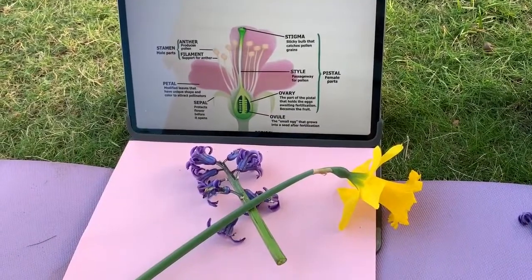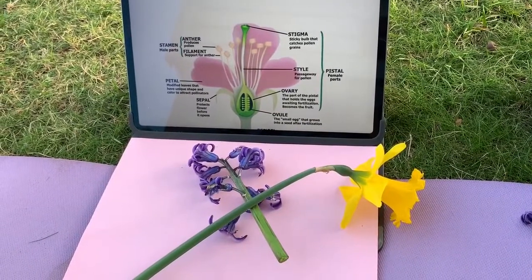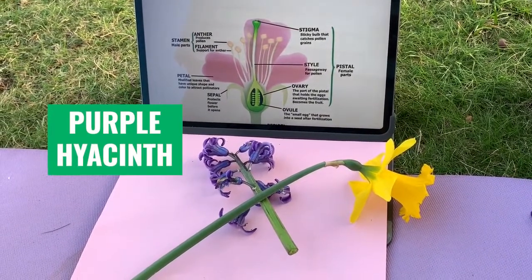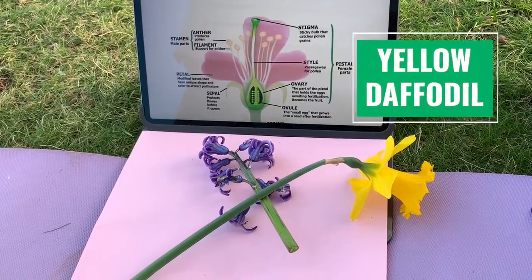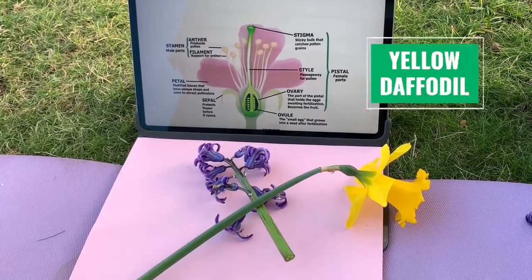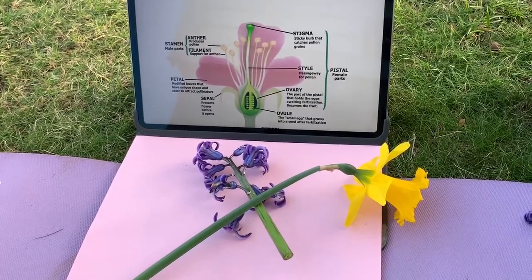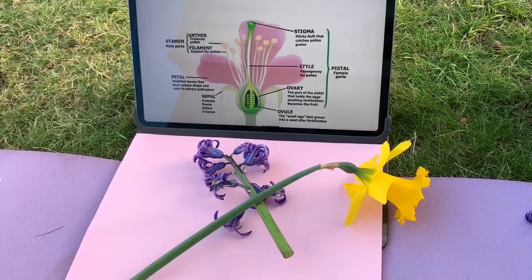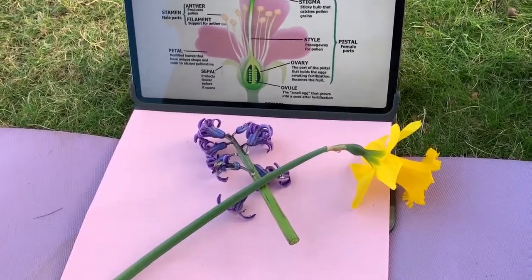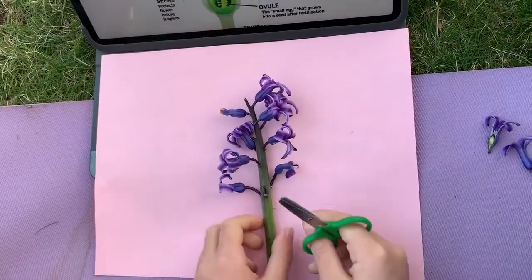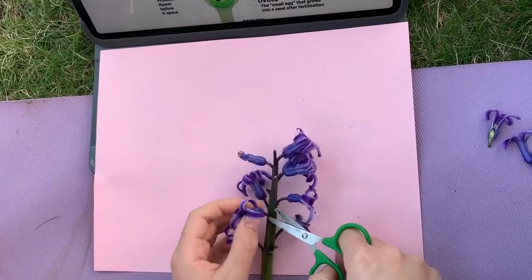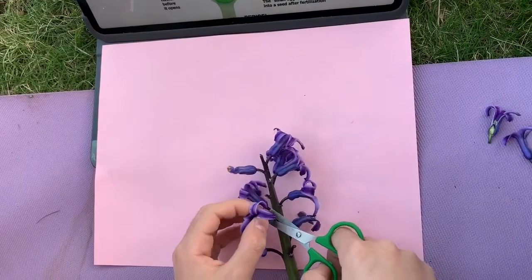Alright, it looks like we have a purple hyacinth and a yellow daffodil. Alright kiddos, let's dissect these flowers and see if they are perfect or imperfect. I am going to cut up this flower and see what parts are inside it too.